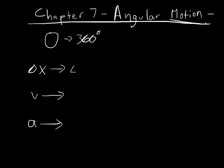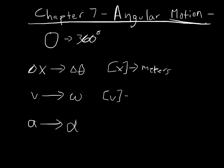In terms of displacement, we have delta theta — an angular displacement. In terms of velocity, we have omega — an angular velocity. And in terms of acceleration, we have alpha — an angular acceleration. So they're the same exact things that we have in linear motion, they're just now moving at angles. For displacement, typical units are meters; for velocity, meters per second; for acceleration, meters per second squared.